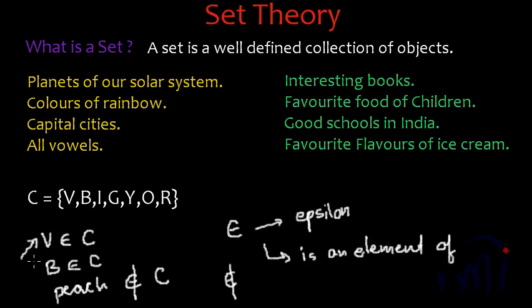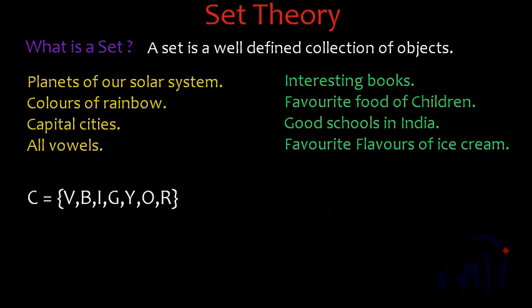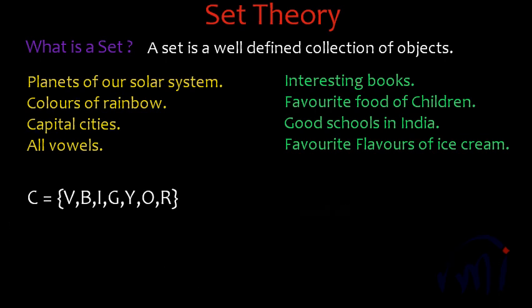So what have we learnt? We have learnt what is a set, how to represent a set, and how to represent an element of a set — or how to write whether a particular object is an element of a particular set or not. After this, we are going to discuss how to find the elements of a set. Sometimes it is not possible to write all the elements, so there are three methods by which you can represent a set.